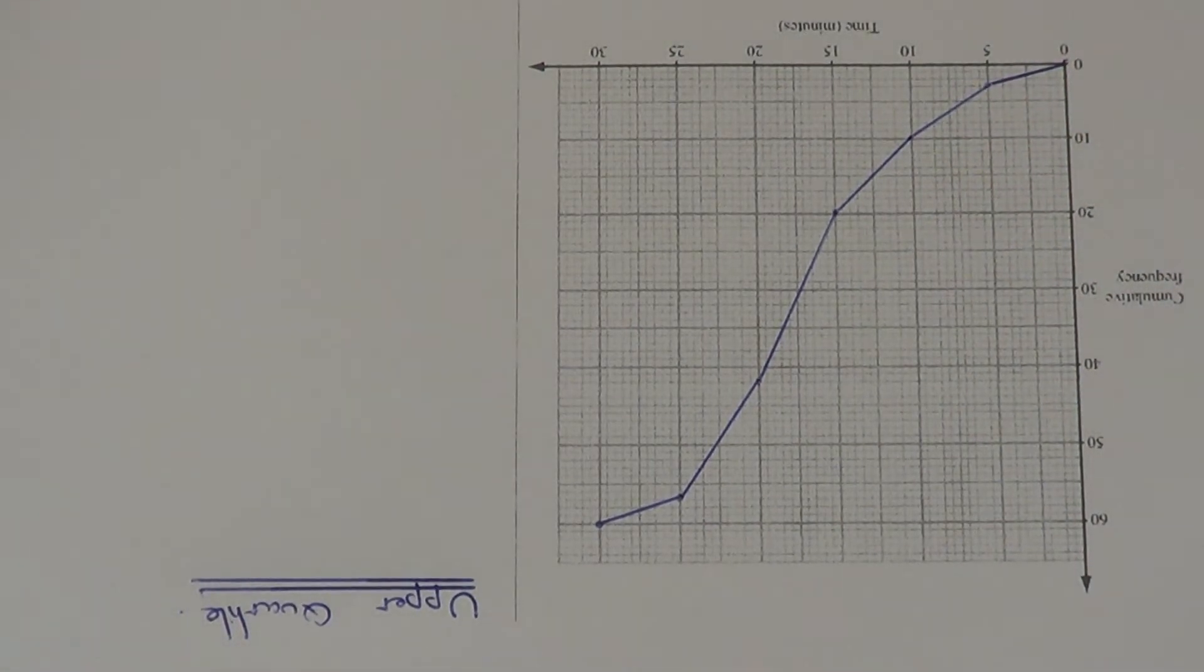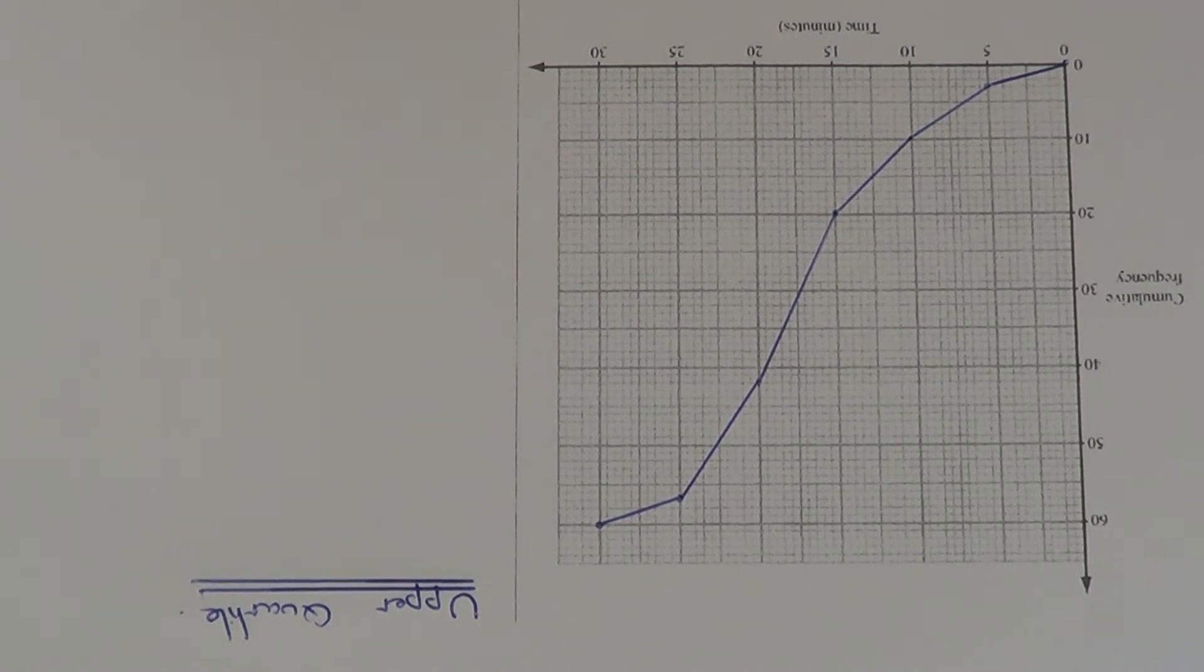Today I want to show you how to work out the upper quartile from a cumulative frequency graph. So in this example here we've got the race times of a group of athletes in minutes who took part in a race.